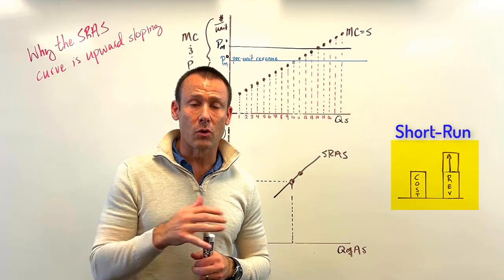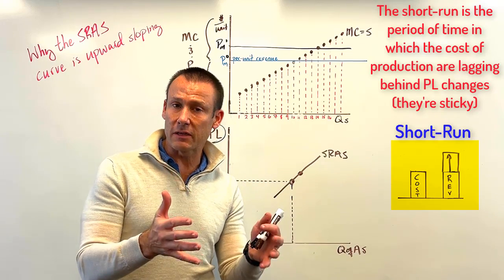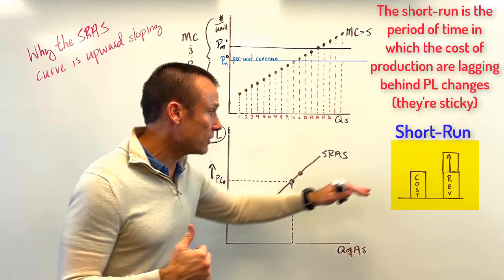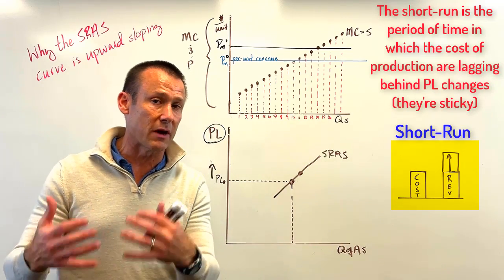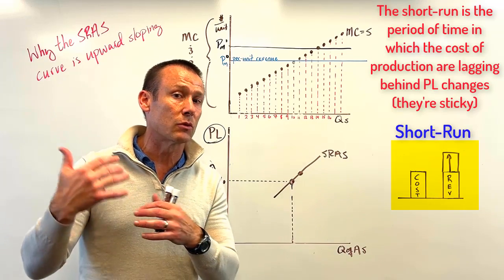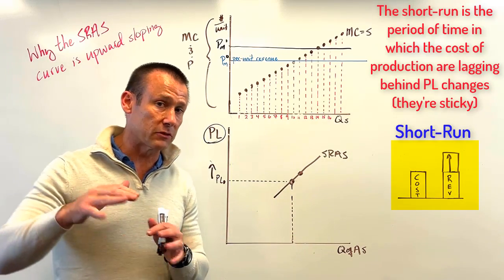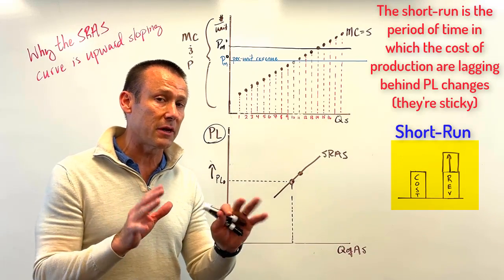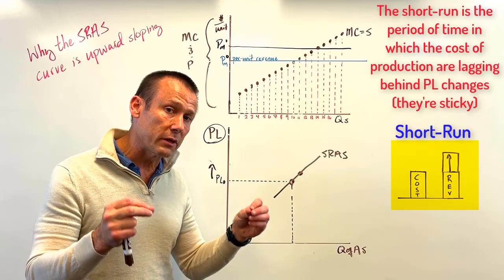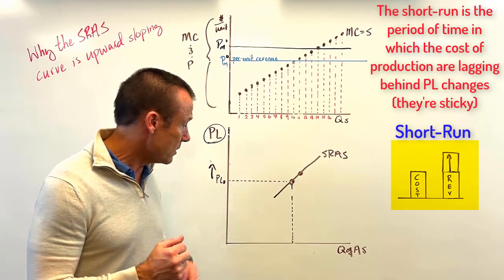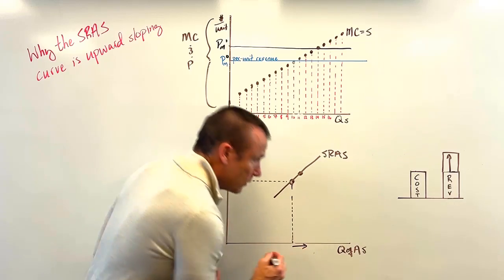The short run is that period of time when costs of production, like wages, have not fully adjusted to price level changes. I like to use the word 'revenue' when talking about businesses' production decisions, because prices are benefits to the supplier — they represent the revenue. So in the short run, when that price level goes up and costs are lagging behind and sticky, it becomes profitable to produce more, so we will produce more.